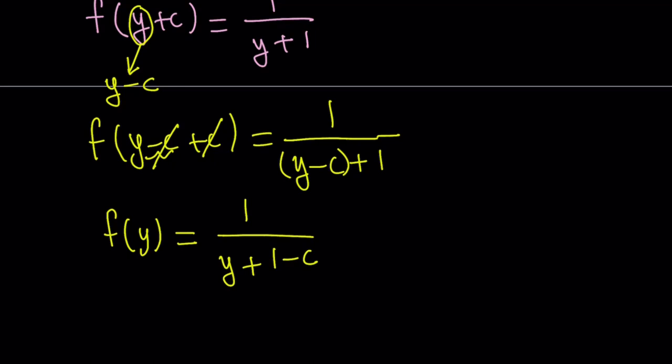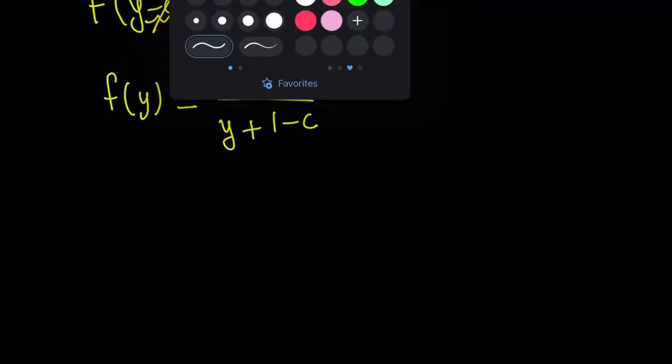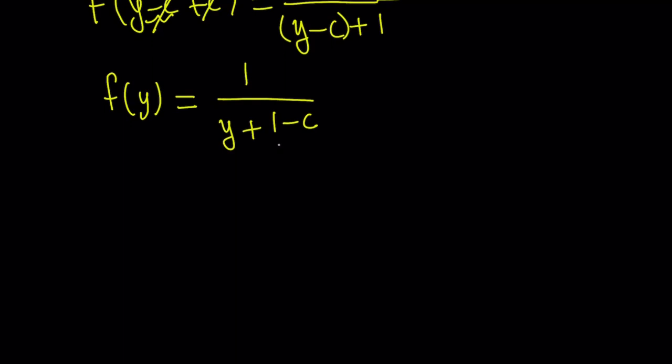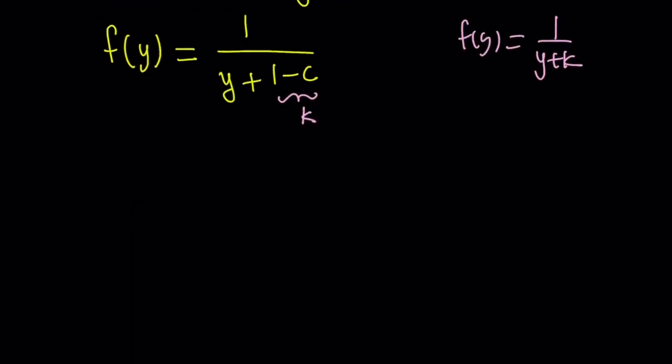I want to replace 1 - c with another constant and just make it a little easier. You don't have to do that, but you could definitely go ahead and solve for this from now on. Let me show you what I mean. I was going to replace 1 - c with k, then we're going to get f(y) = 1/(y + k). Then we know that f(1) = c, and then replace y with 1 and go from there. But we can directly do it, so let's go ahead and do it directly.